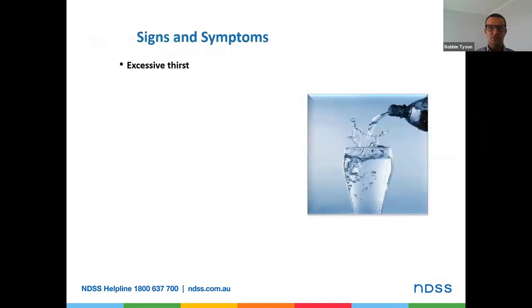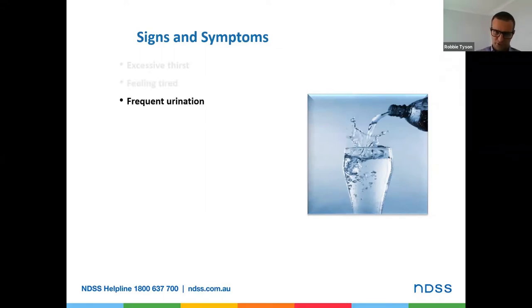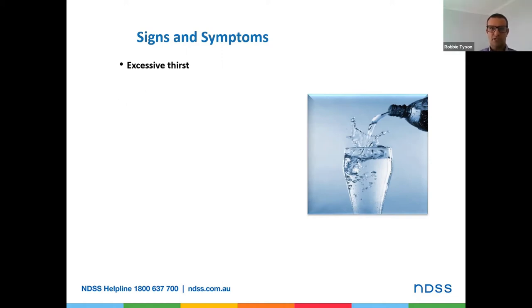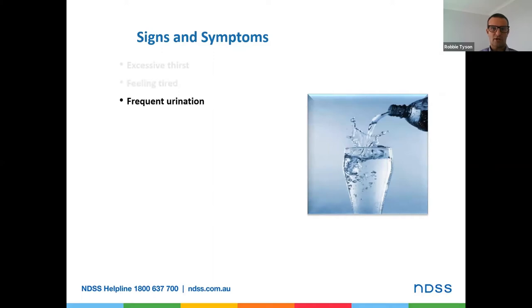Looking at some common signs and symptoms: excessive thirst and feeling tired are quite common. Excessive thirst goes with frequent urination — the extra glucose in the blood causes the body to try and flush it out through urine, leading to excessive thirst in a continuing cycle. Feeling tired results from glucose that should be in the cells providing energy instead remaining in the blood where it shouldn't be, so feelings of lethargy are quite common.